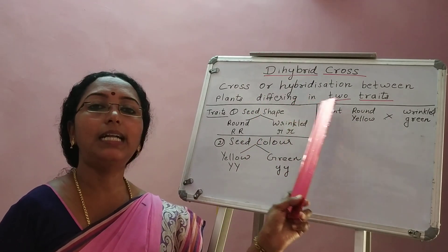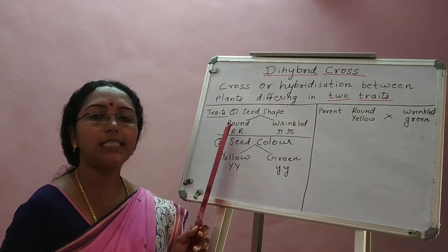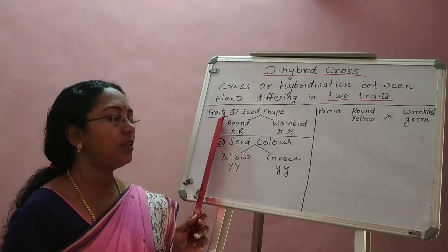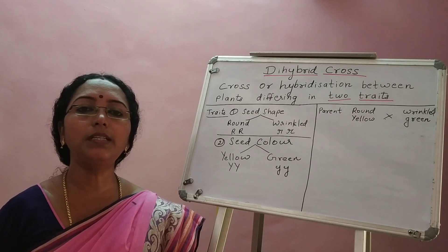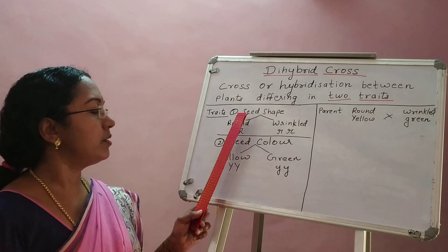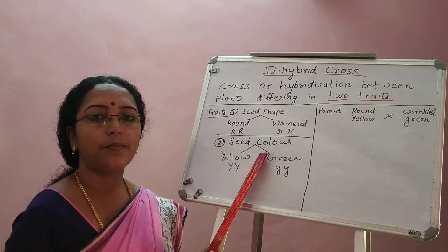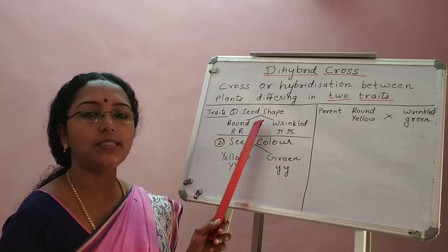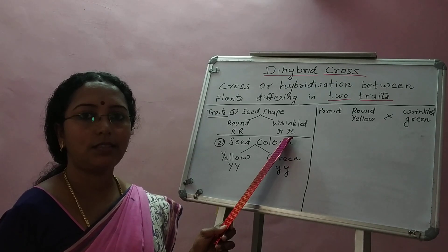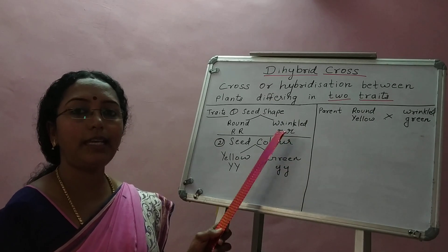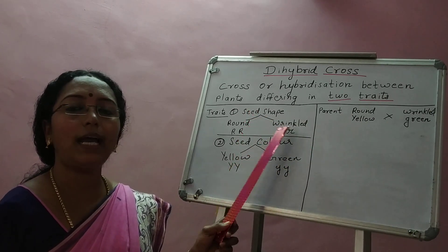A dihybrid cross is a hybridization between plants differing in two traits — that is why it is called a dihybrid cross. If they differ in one trait it's a monohybrid cross; if they differ in two traits it's a dihybrid cross. Let's take an example. I have taken two plants that are similar in all five of Mendel's characteristics but differ in two characters. The first character I've taken is seed shape, which has two forms: round or wrinkled.